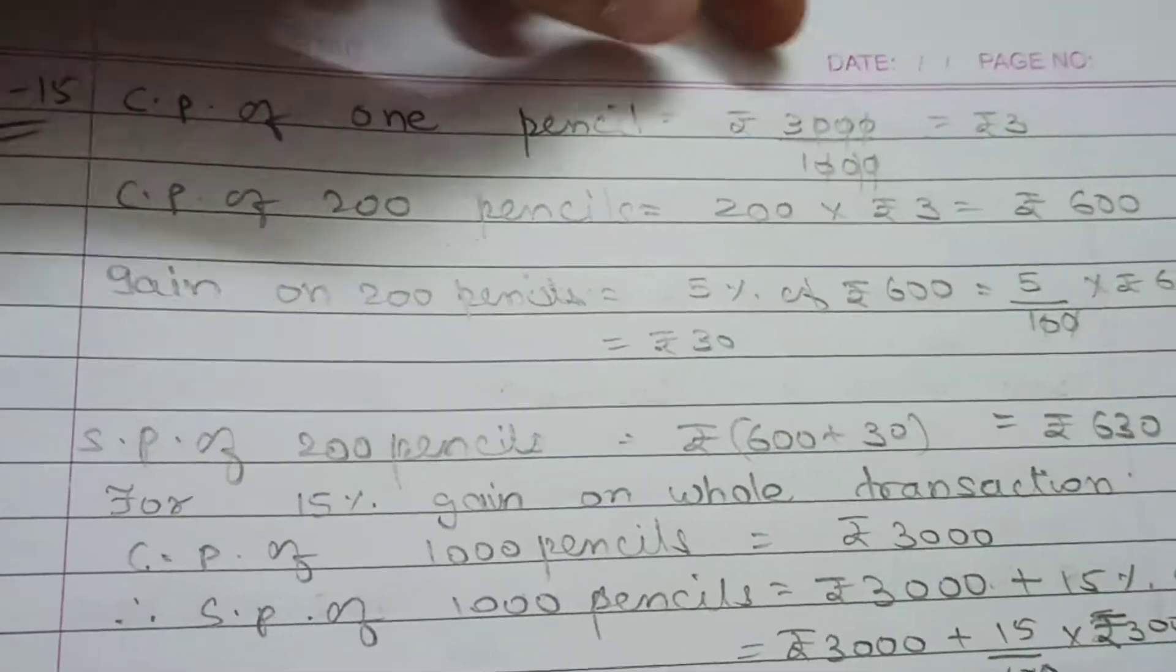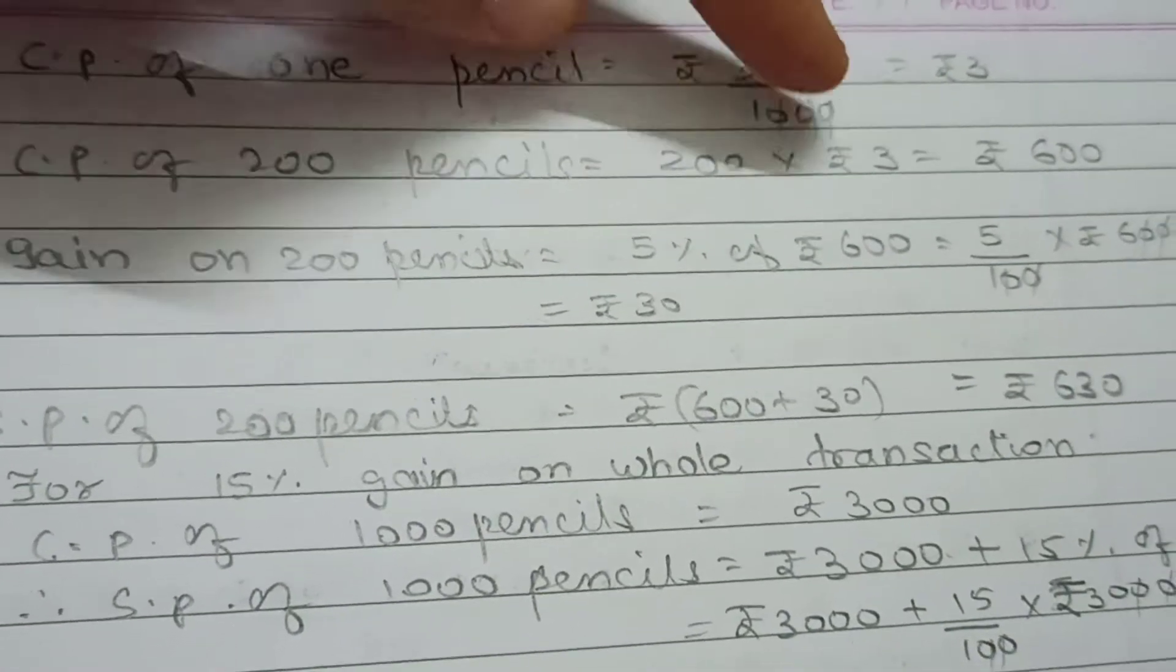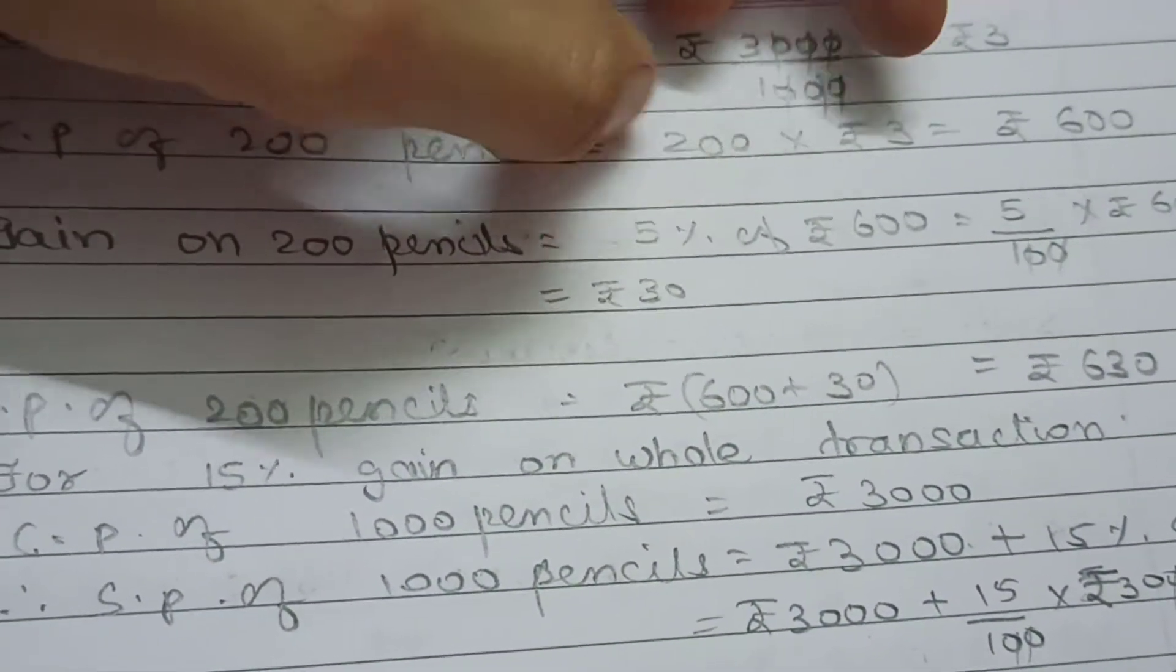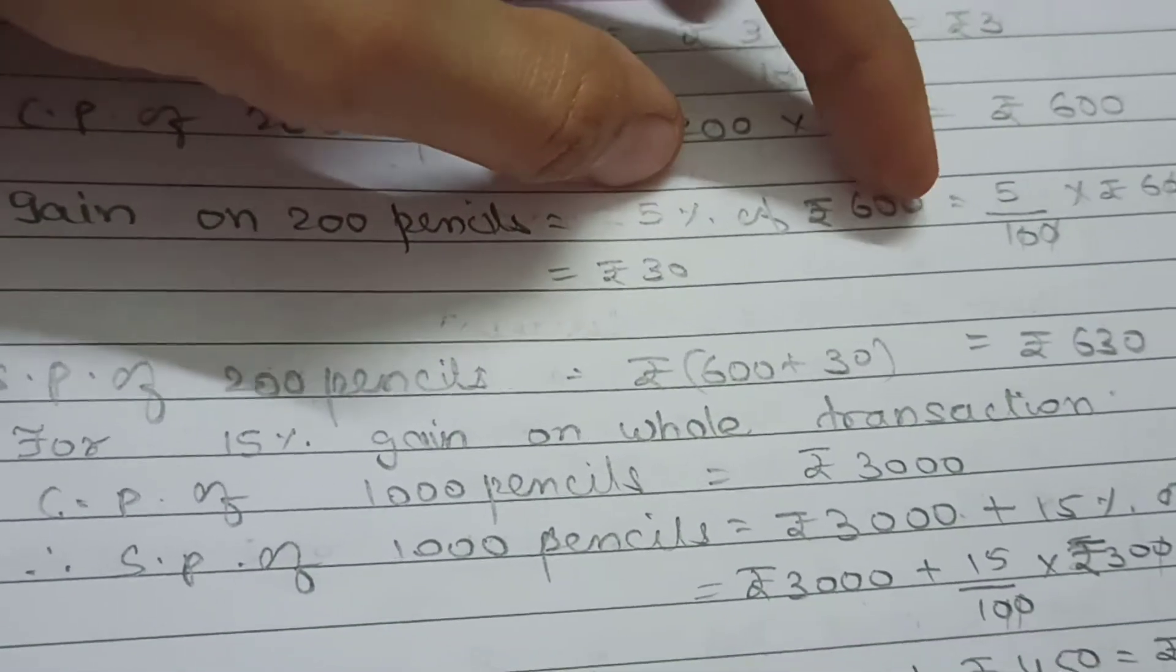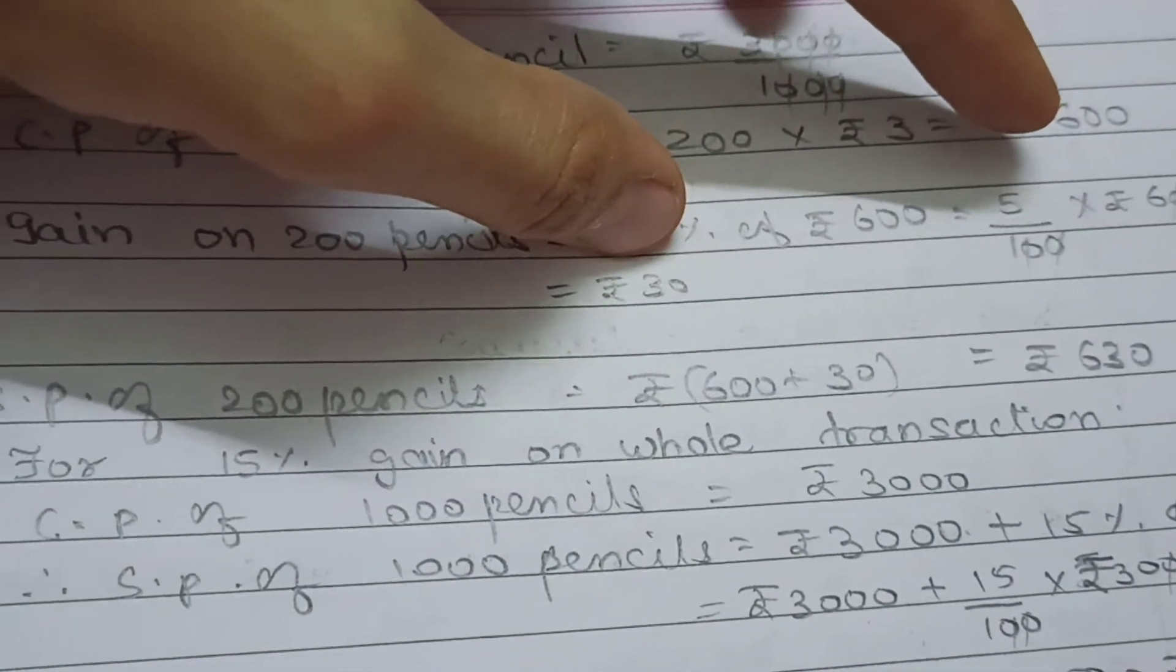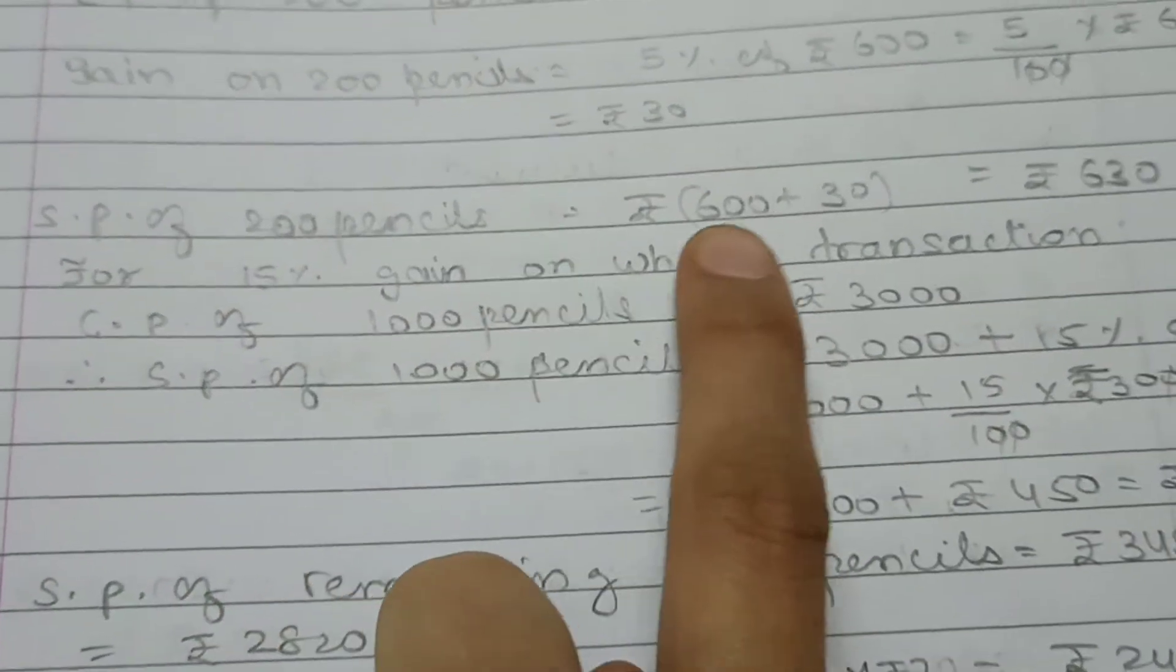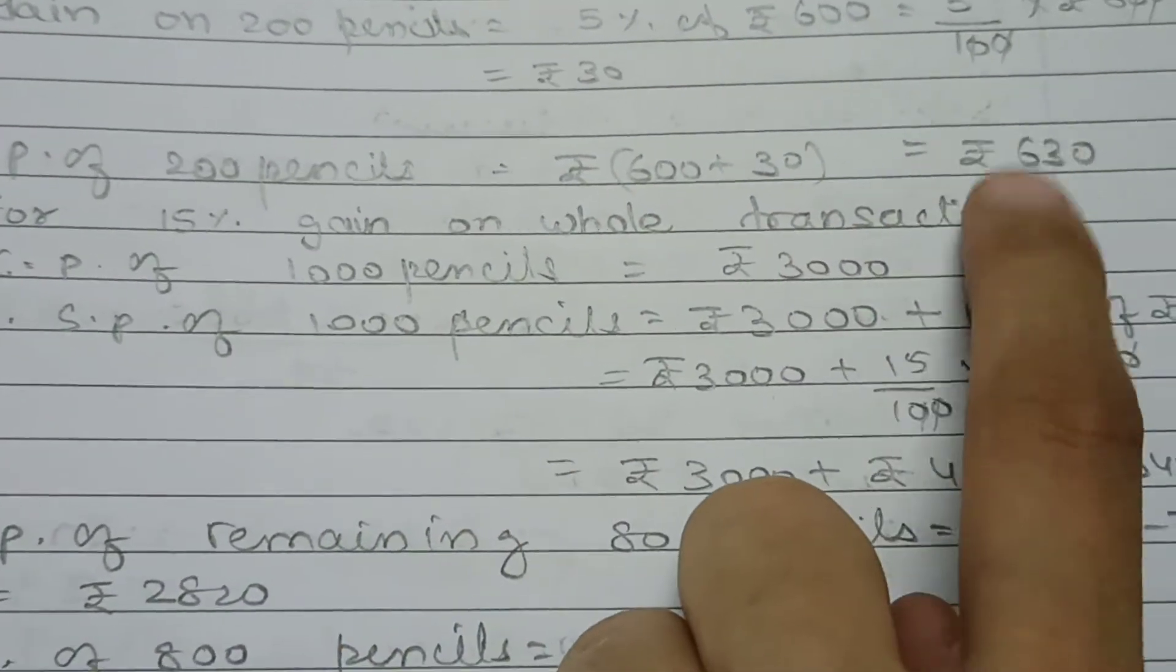Cost price of one pencil is rupees 3. Cost price of 200 pencils is 200 multiplied by 3, equals 600. Gain on 200 pencils is 5% of rupees 600, which is 5 by 100 multiplied by 600, equals rupees 30. SP of 200 pencils is CP plus gain, that is 630 rupees.